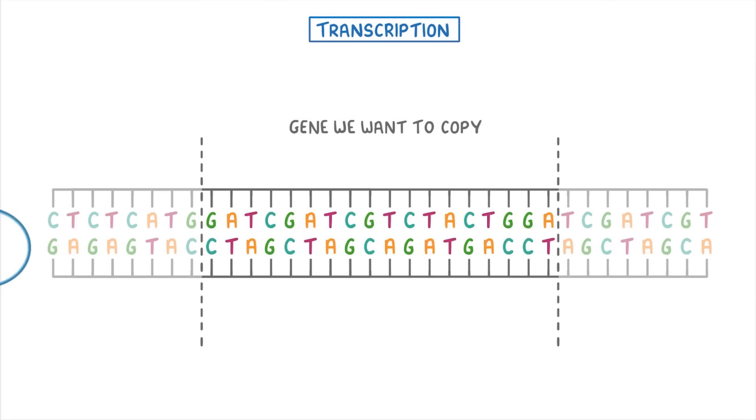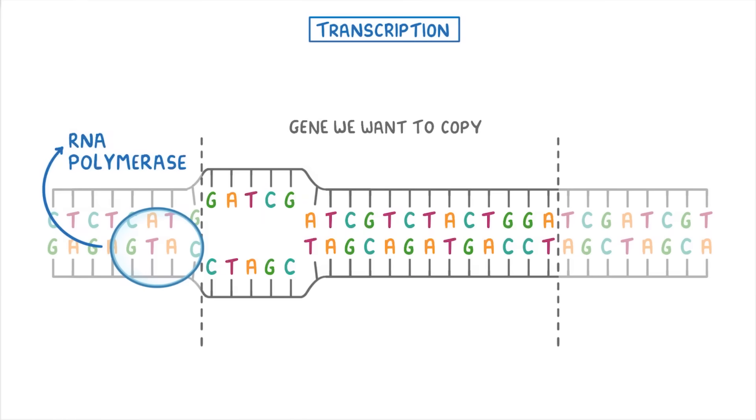The process starts with an enzyme called RNA polymerase, which binds to the DNA just before where the gene starts. Then, just ahead of the RNA polymerase, the two strands of DNA separate apart so that all of their bases are exposed. Then the RNA polymerase is basically going to move along the DNA strand and read the bases one by one and use them to make an mRNA strand.